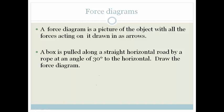This is quite an easy one. We've got our horizontal road and our box, and there is our rope. The rope is pulling at an angle of 30 degrees, so we could say that is the tension of the rope, because a force in a rope is always called a tension.